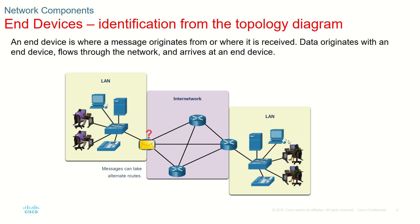Please remember the topology diagram and what each picture represents. This icon is a PC, this is a server, this is an IP phone, and this is a switch — which is not an end device, it is an intermediary device. And this is a router, another example of an intermediary or networking device.